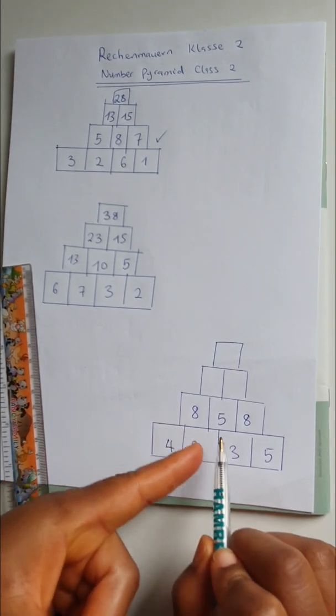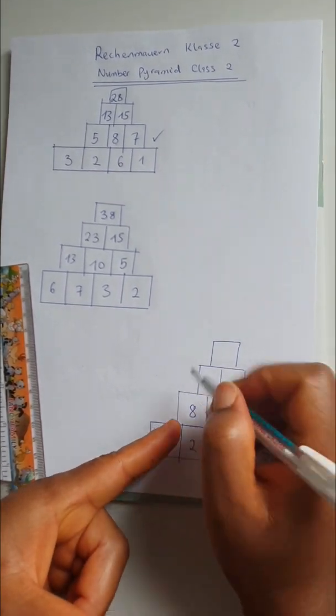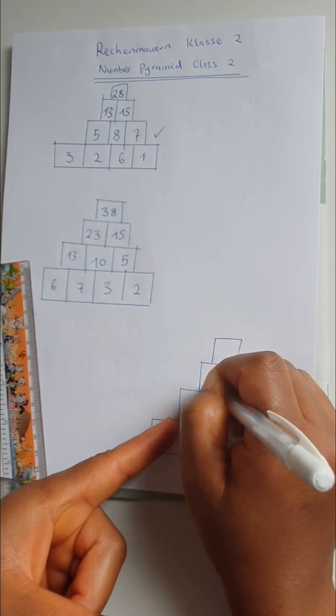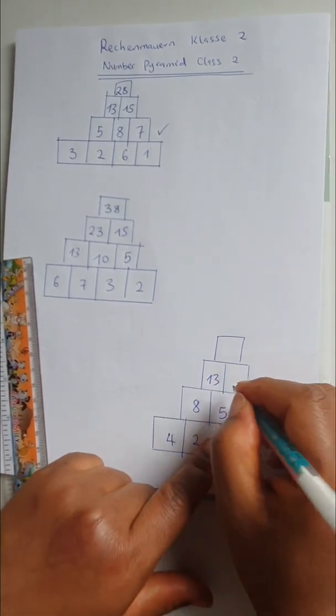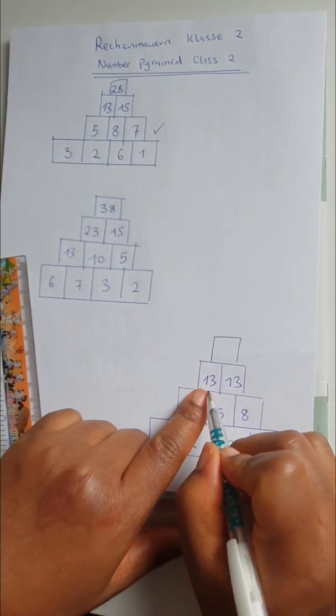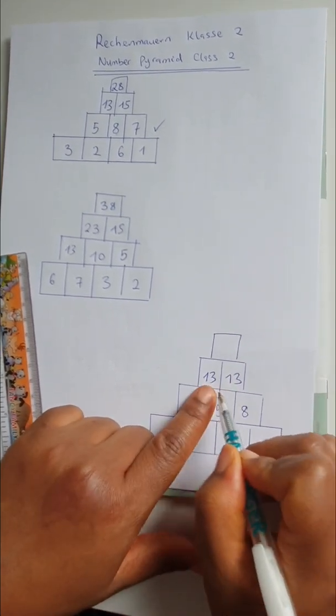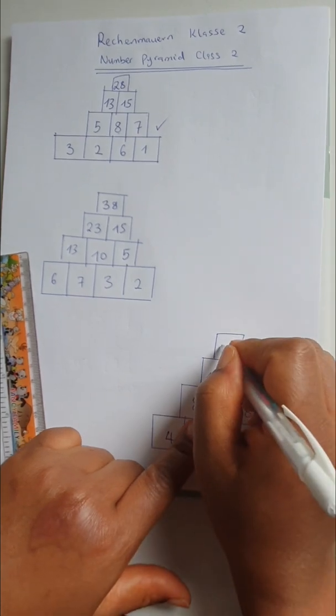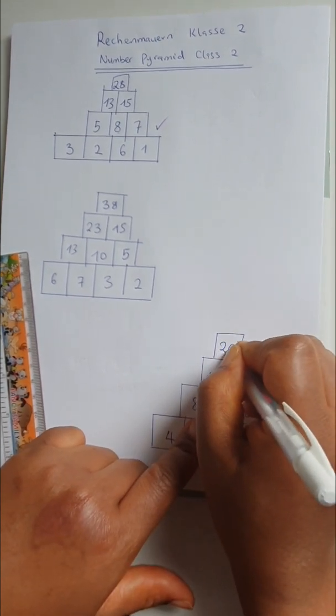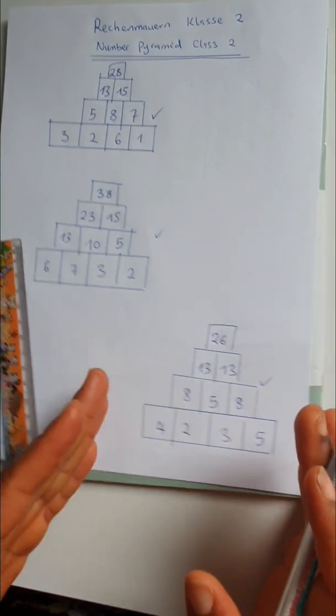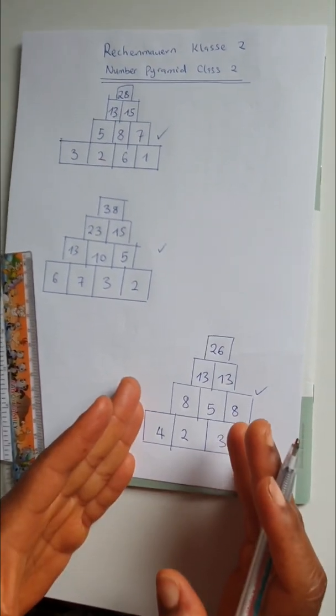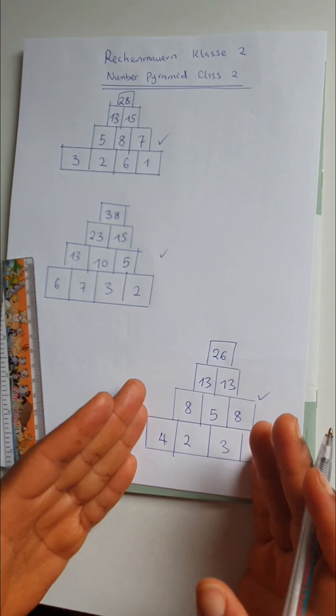6 plus 5 is 11. 5 plus 8 is 13. 11 plus 13 is 24. Check and check.